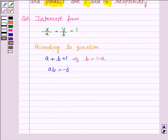So, substituting b is equal to 1 minus a in this, we have a into 1 minus a is equal to minus 6. And this implies a minus a square plus a plus 6 is equal to 0.